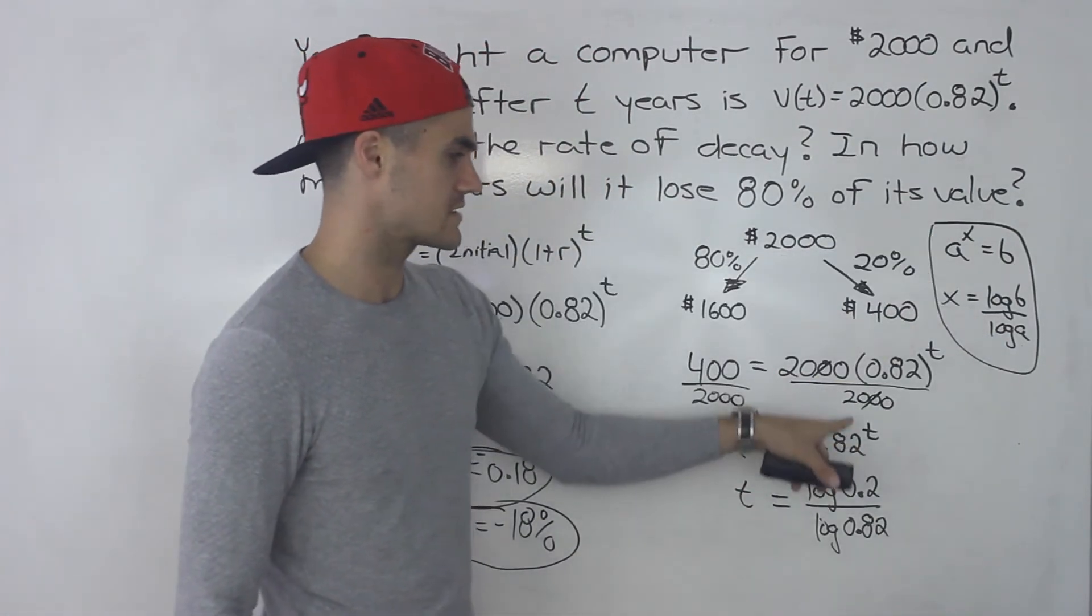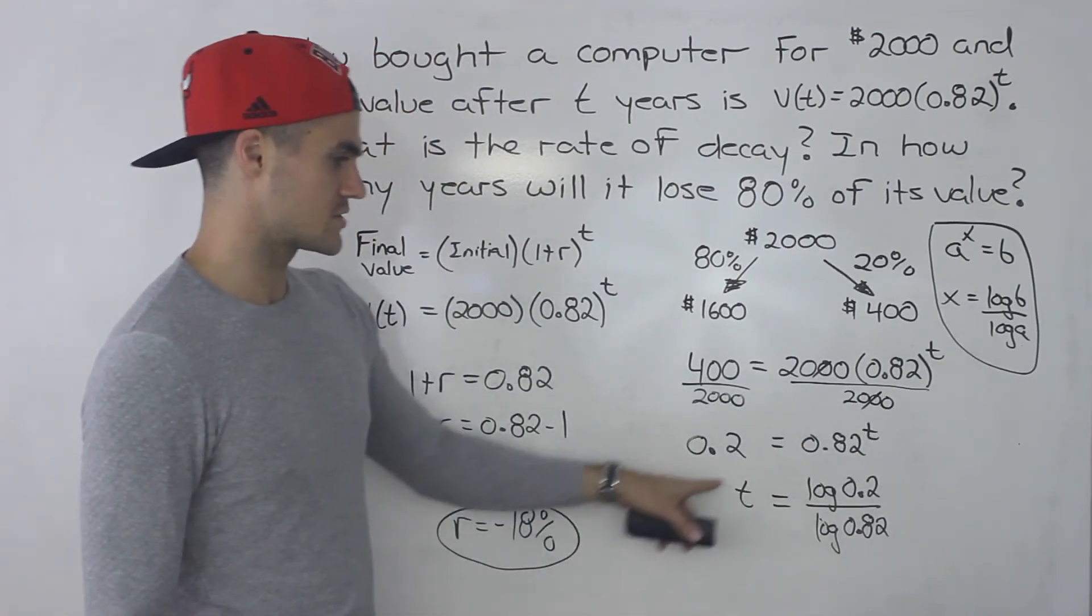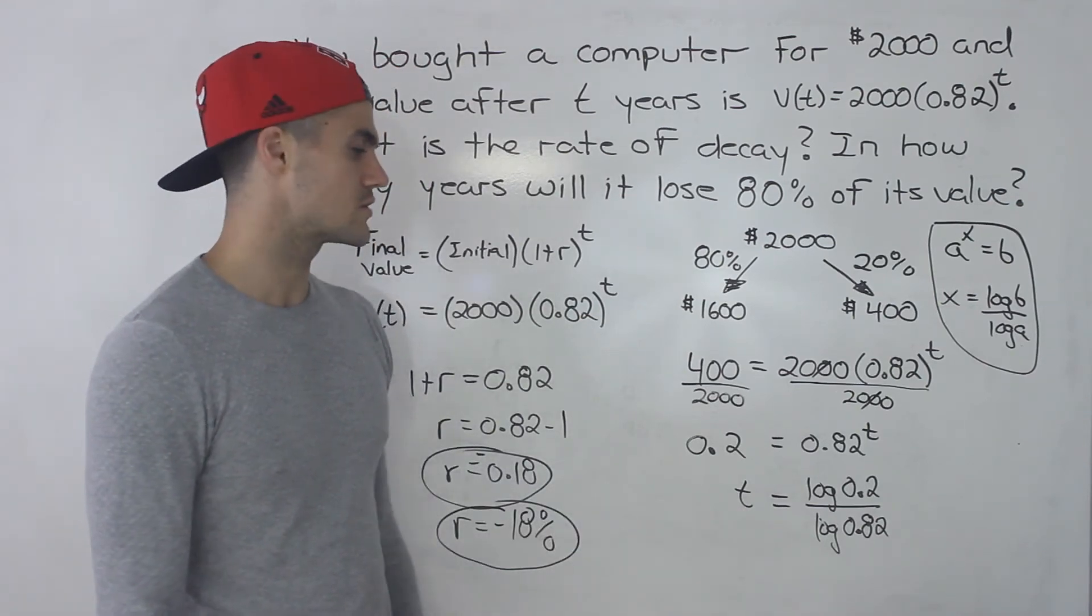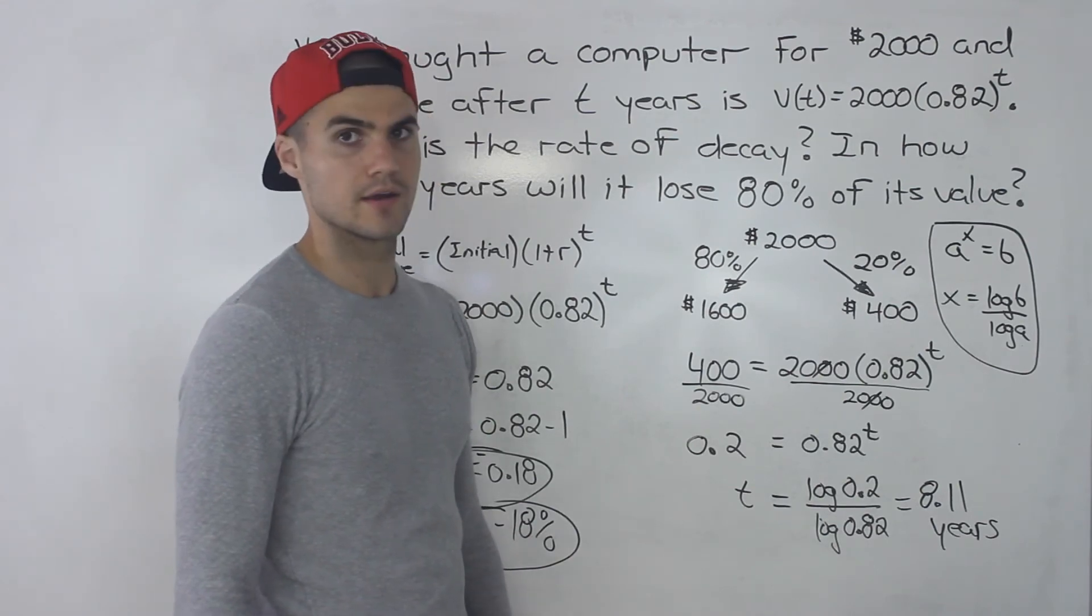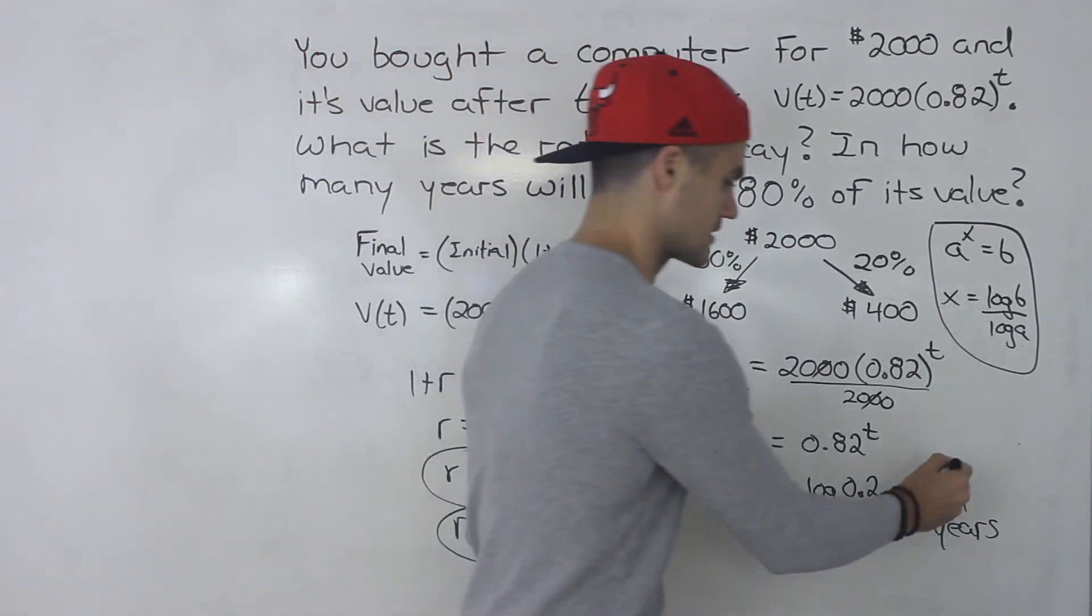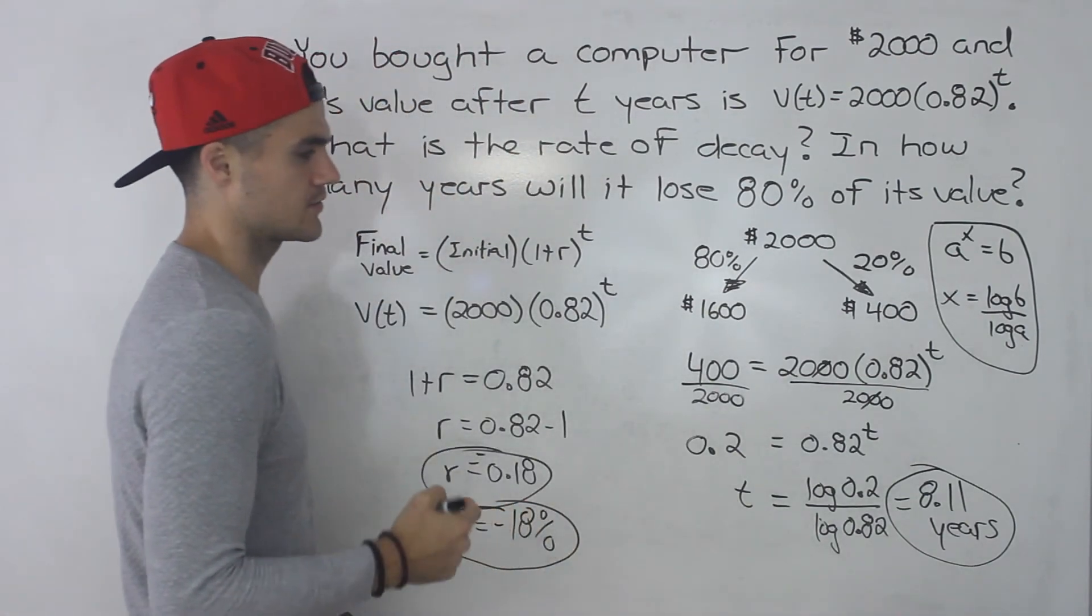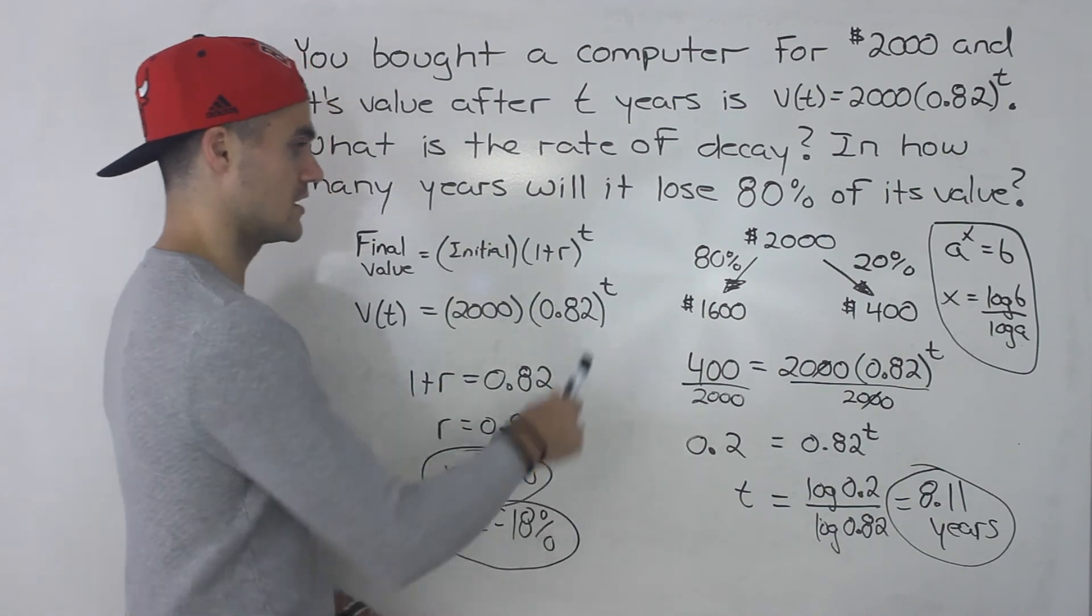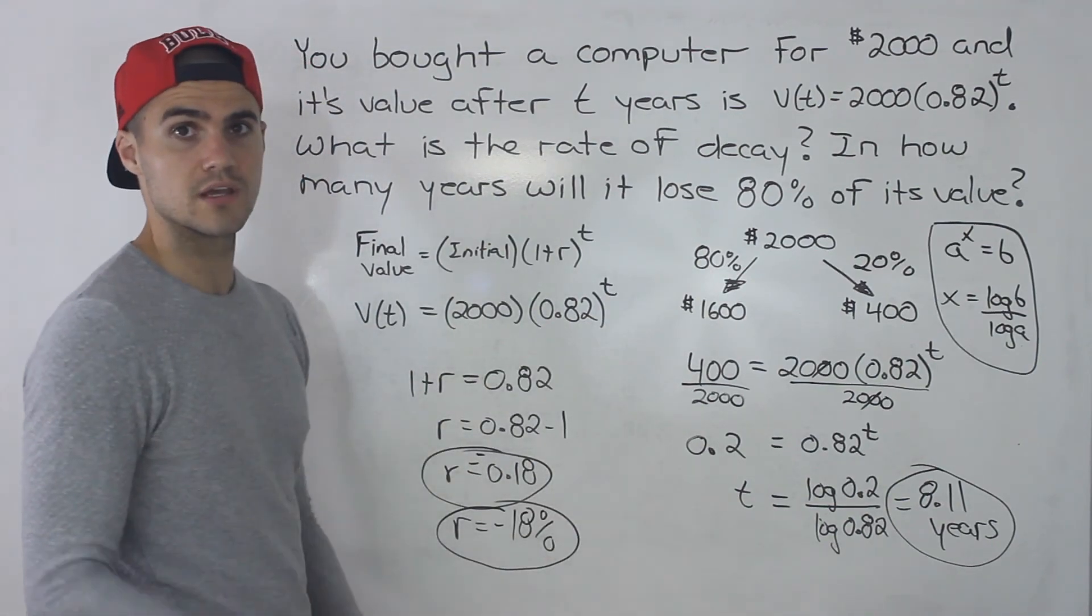So you would just plug that in the calculator and that would give you the t value, the number of years. And when you do that calculation you end up getting 8.11 years. So that is the answer. That's how long it takes for the computer to lose 80% of its value. And you could check your answer. You could take that figure 8.11, plug it in for t and the value that you get should be 400.